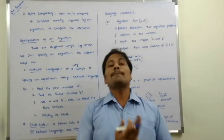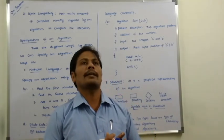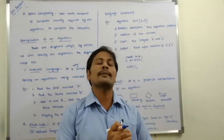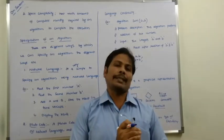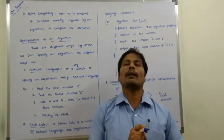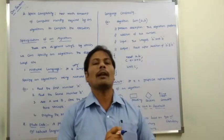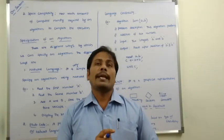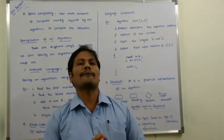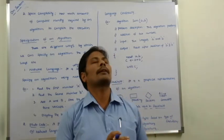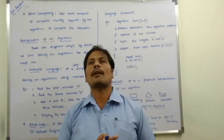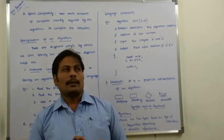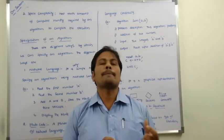Types of algorithms: algorithms are classified into two types based on their way of execution. The first one is sequential algorithm — instructions are executed one after the other. The second one is parallel algorithm — instructions are executed in parallel manner. These are the specification and types of algorithms.